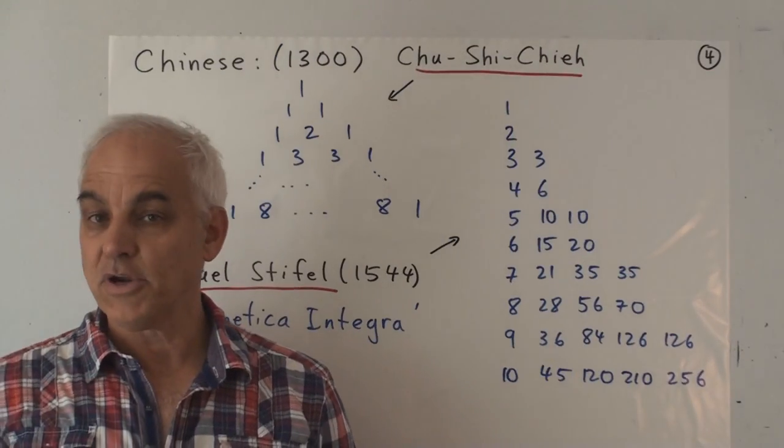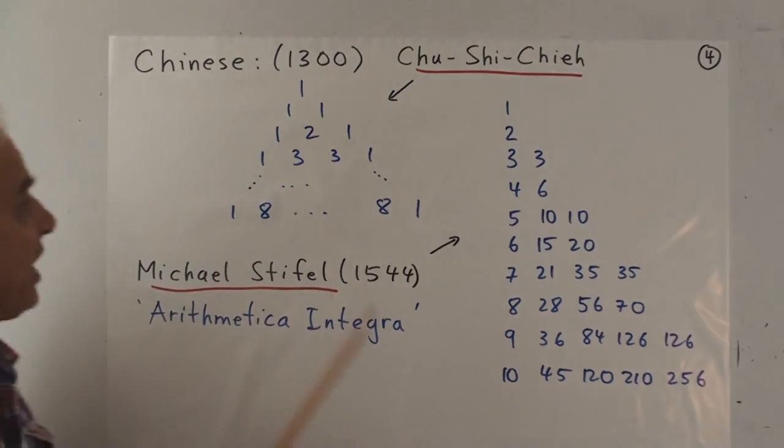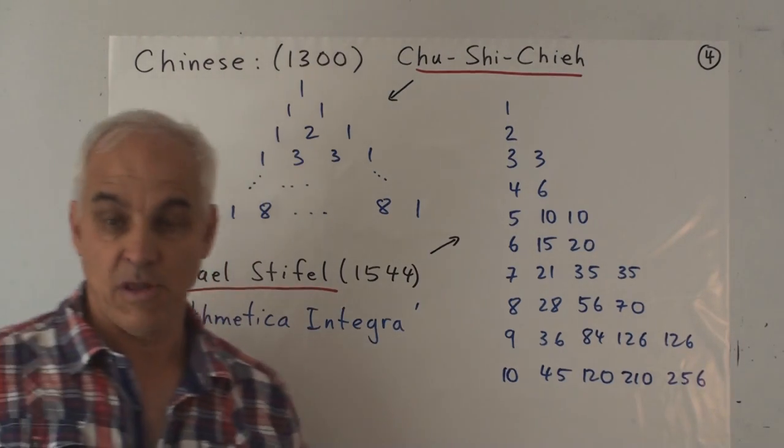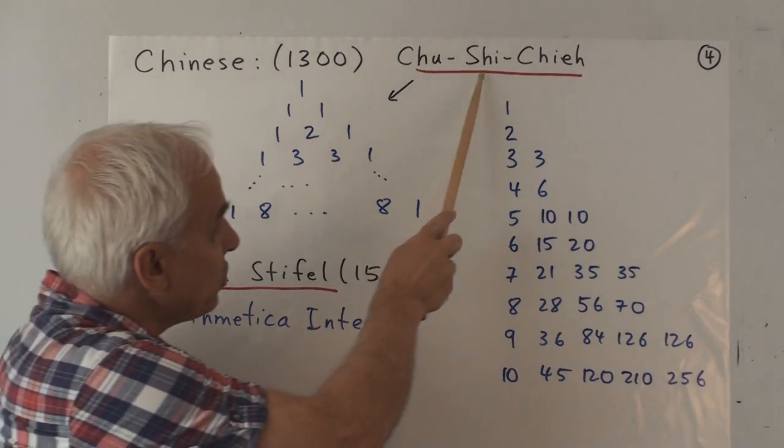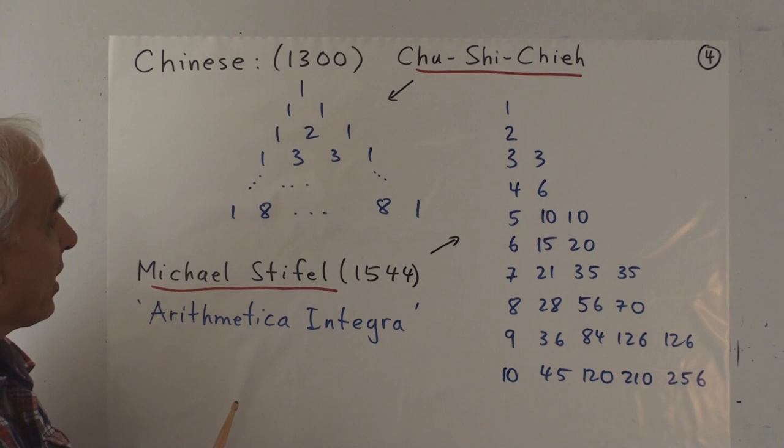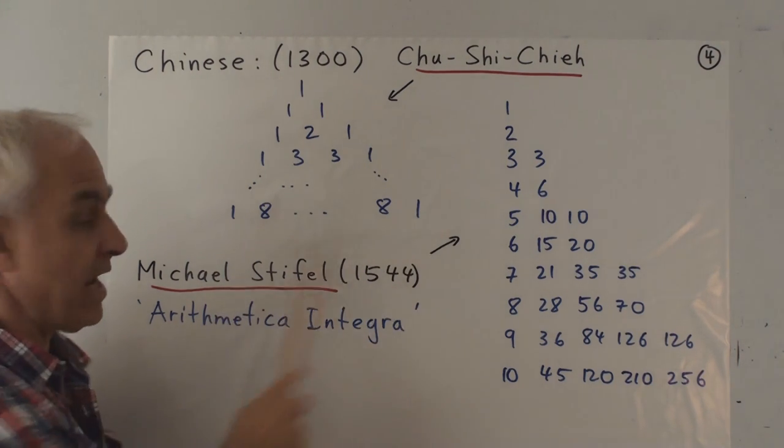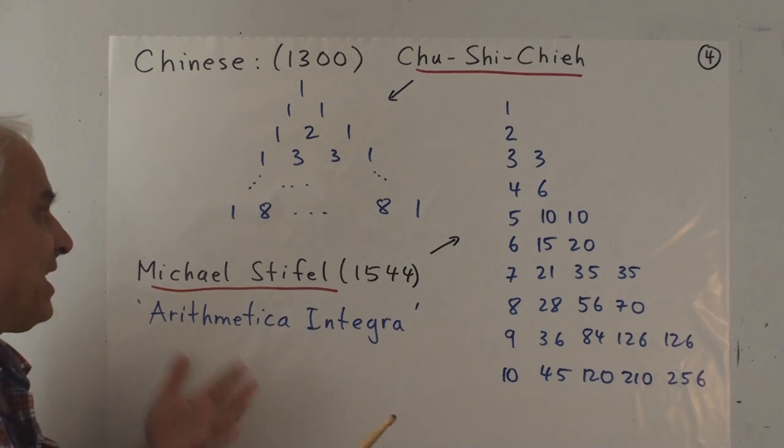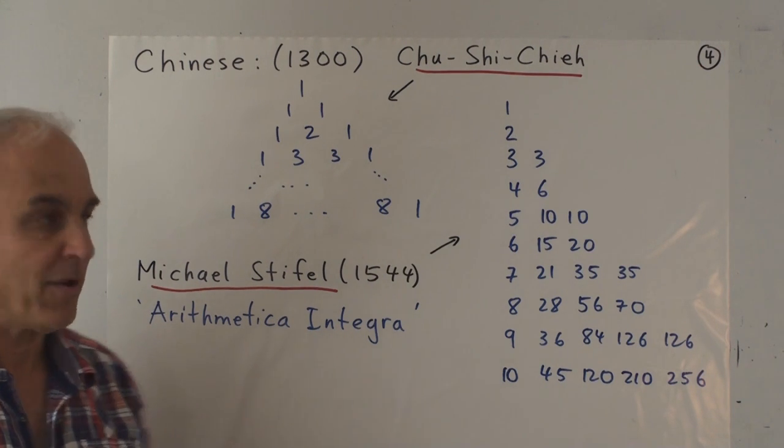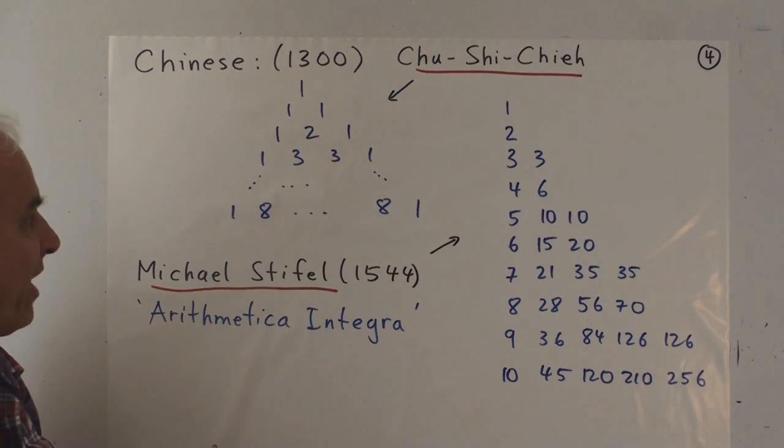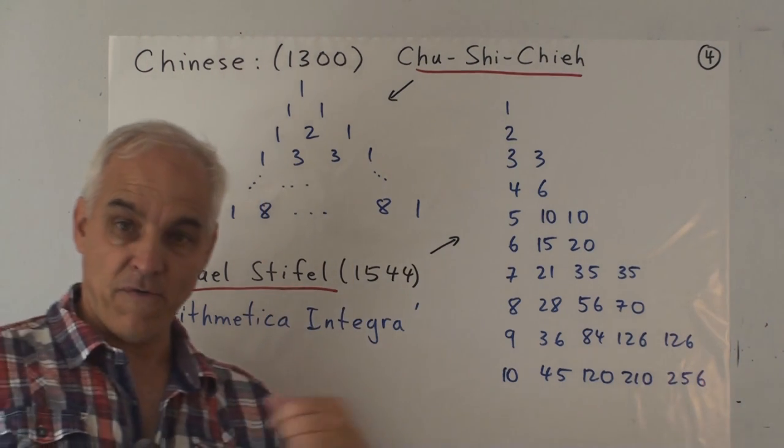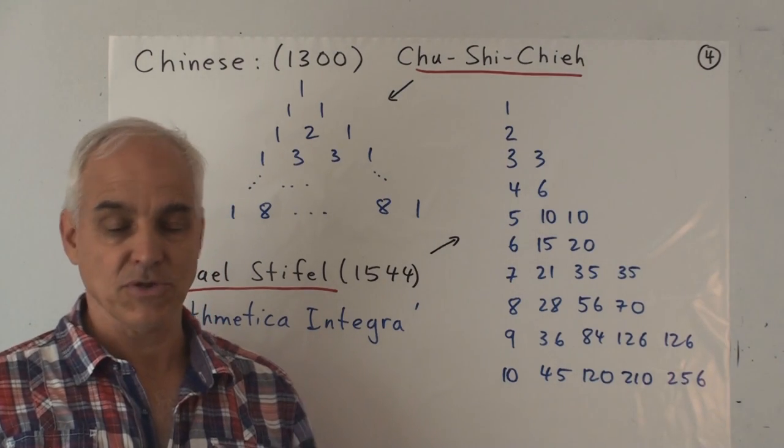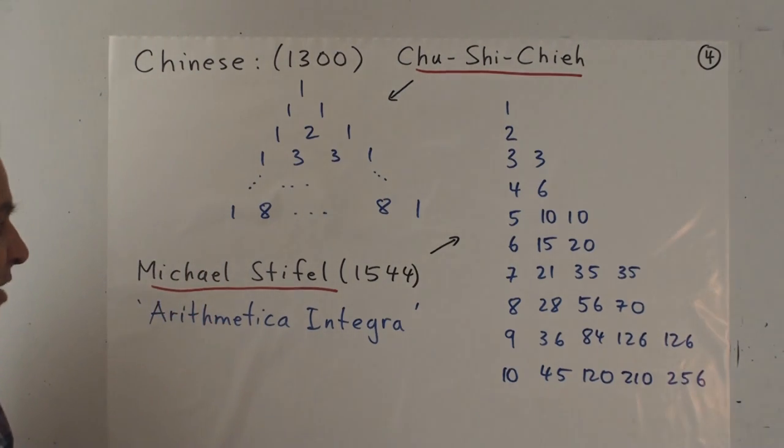So a few hundred years after Khayyam, the Chinese certainly understood the binomial theorem as well. We have a mathematician, Chu Shi Jie, whose work includes this table here, which we now see or think of as the Pascal triangle. So it actually goes back several hundred years before Pascal to Chinese mathematicians. And it's clear here that this row here, for example, represents the coefficients when you expand a plus b cubed. So the Chinese knew how to expand binomials.